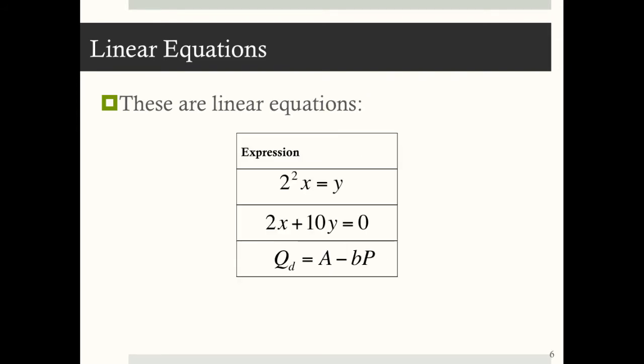Now these are linear equations: 2 squared times x equals y — that 2 is a constant, so having a squared constant is fine. 2x plus 10y equals 0 is a linear equation. And q sub d equals a minus bp, with a and b as constants — that's a linear equation.